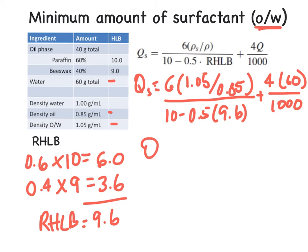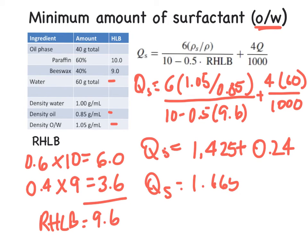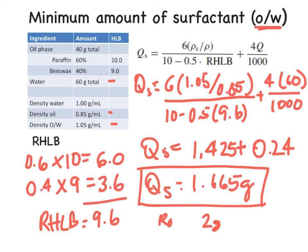So if we plug all this in to our calculators, we'll get a QS of 1.425 plus 0.24. So QS is going to equal 1.665 grams. That would be the minimum amount we need. Often that would just be rounded up to the nearest gram. So we'd probably round to 2 grams.